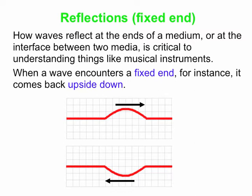The bottom line here is that when a wave encounters a fixed end — and a fixed end is one that is not free to move around, it's fixed in place — then it comes back upside down. So it travels down the string to the right, it's the right end of the string which is tied down so it can't move, and it comes back inverted or upside down. So let's see this in action.